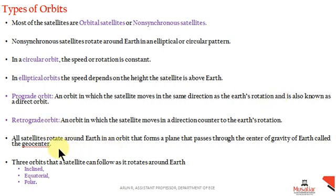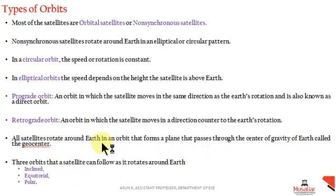An important point: all satellites rotate around the earth in an orbit that forms a plane passing through the center of gravity, known as the geocenter. Orbits can be classified into three types: inclined, equatorial, and polar orbits.